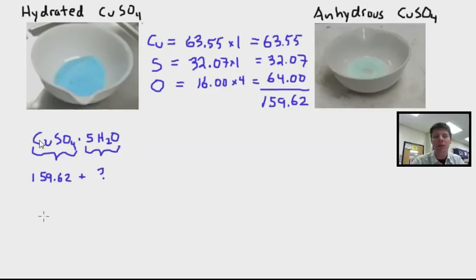So we know that the molar mass of the copper sulfate pentahydrate will include the 159.62 grams from the copper sulfate. We need to add on the additional mass which is coming from those five moles of water.